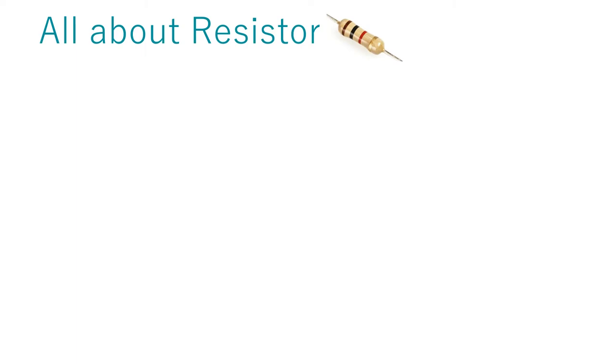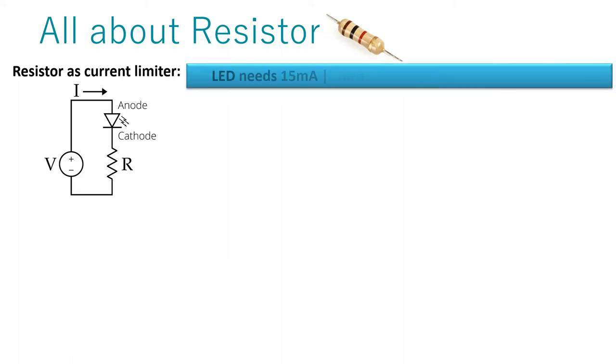Resistor is used to limit the flow of current in a circuit. For example, if we want to glow an LED using a 5 volts battery, then we must know the turn-on voltage and current consumption of that LED. If we not use the right value resistor, then battery can damage the LED by giving it high voltage and current. Suppose this LED needs 2 volt to turn-on and 15 mA current to operate.